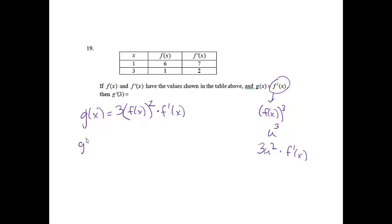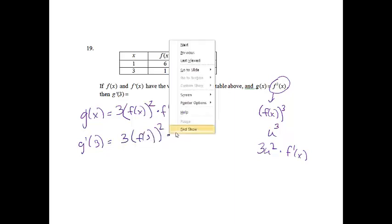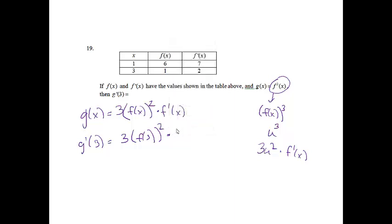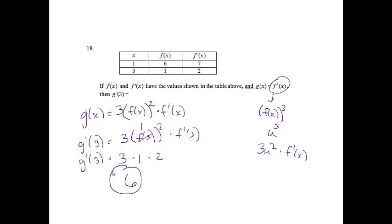We know x is 3, so wherever I see an x I put a 3. G prime of 3 equals 3 times f of 3 squared times f prime of 3. f of 3 equals 1, and 1 squared is 1. f prime of 3 equals 2. So the derivative at 3 is equal to 6.